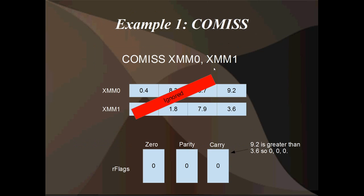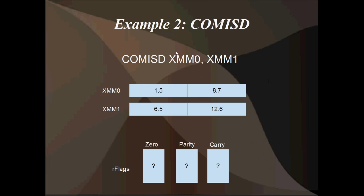Here's an example. This goes for the ordered comparison, or the COMISS and COMISD instructions, and it's essentially the same operation with the unordered comparisons, UCOMISS and UCOMISD. So we've got COMISS XMM0, XMM1, and the top three elements of each operand are completely ignored. All that's going to happen is 9.2 is going to be compared to 3.6 — that's the zeroth, or lowest, element in both — and the flags are going to be set accordingly. Since 9.2 is greater than 3.6, we're going to get 0, 0, 0 in the zero flag, parity flag, and carry flag respectively.